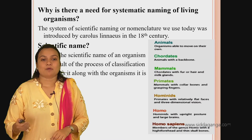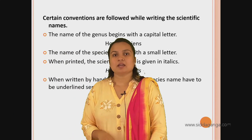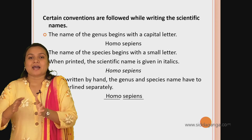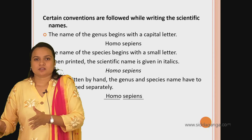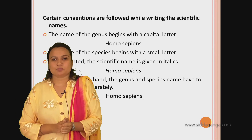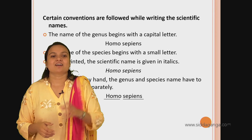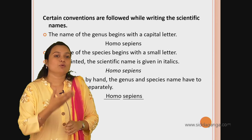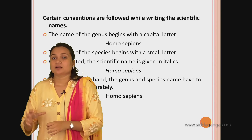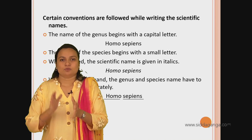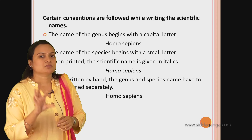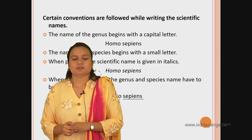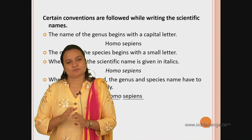So this was today's class. We discussed about the relationship between classification and evolution, the hierarchy of classification - different categories: kingdom, phylum, class, order, family, genus, species (KPC of GS) - and also the nomenclature, what is a scientific name. In the next class, let us discuss about the five kingdoms given by R.H. Whittaker: monera, protista, fungi, plantae, and animalia. Thank you.